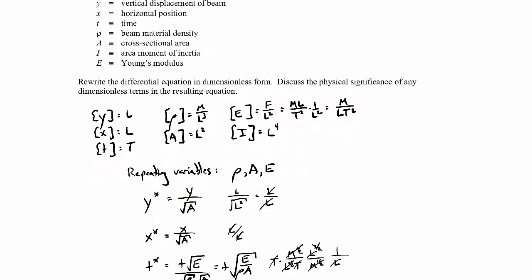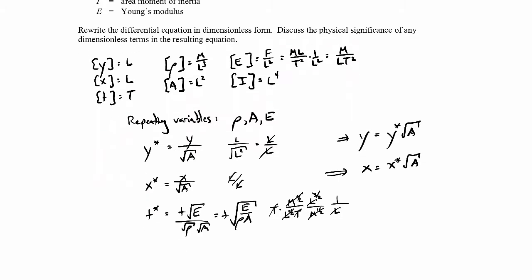To get y, the parameter y will be y star times the square root of A. To get x, it'll be x star times the square root of A. And to get t, it will be t star times the square root of rho A divided by E. I'll substitute these back into our original equation.